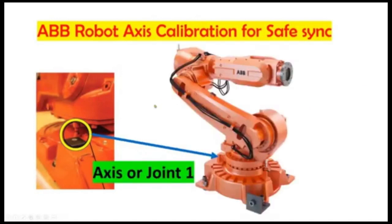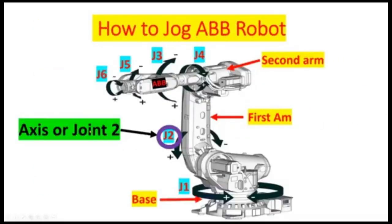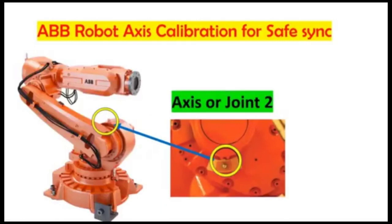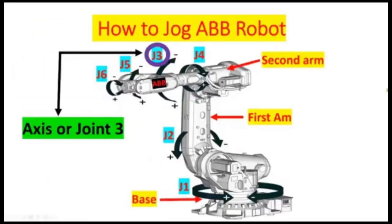Axis or joint one, axis or joint two — located on the first arm. This is the location of axis two, and this is the actual location of axis two on the robot.